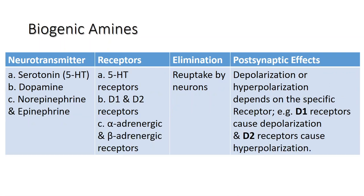The biogenic amines are enzymatically made from amino acids. They no longer have carboxyl groups and are therefore no longer classified as amino acids. Serotonin is made from tryptophan. It is the basis of the serotonergic system, which has its own specific receptors. Serotonin is transported back into the presynaptic cell for repackaging.